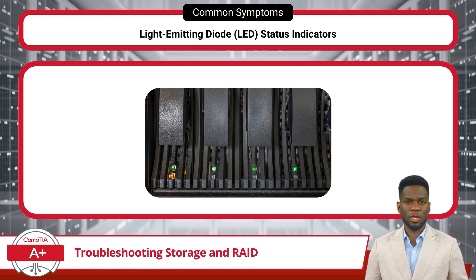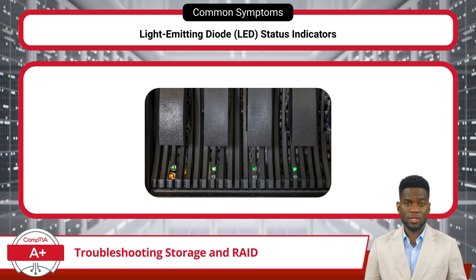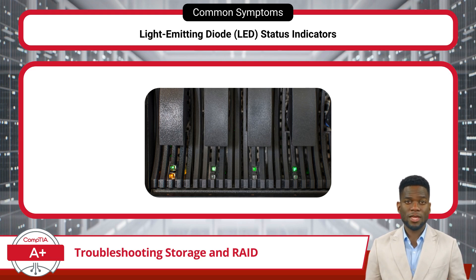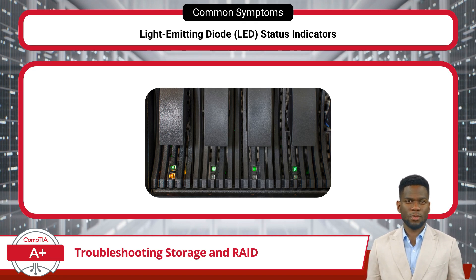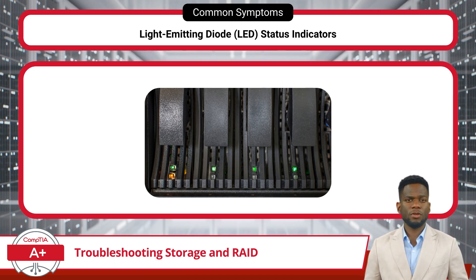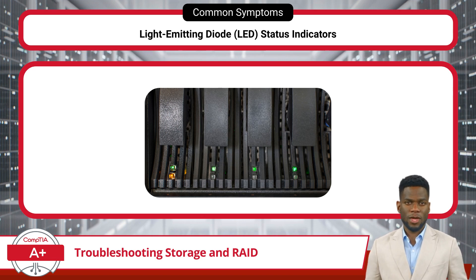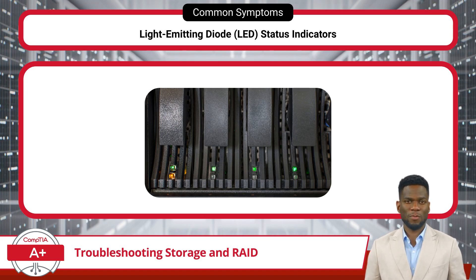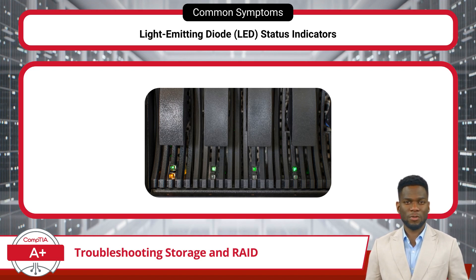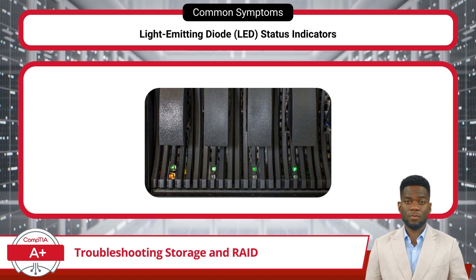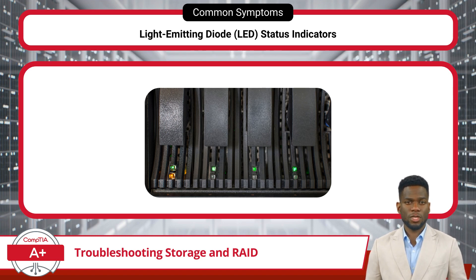Deviations from the standard green light can alert users to potential issues. For instance, a flashing red LED might indicate a drive failure, prompting immediate action to replace the faulty disk and initiate data recovery procedures. Similarly, an amber or orange light might suggest a cautionary state. Furthermore, specific blinking patterns may denote ongoing data transfer activity. By interpreting these LED status indicators correctly, users can promptly identify and address potential problems, minimizing downtime and safeguarding data integrity.